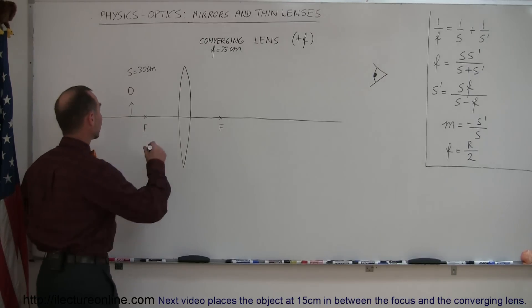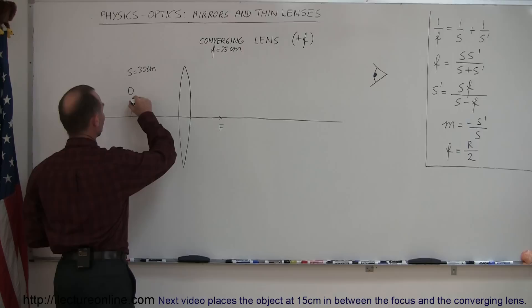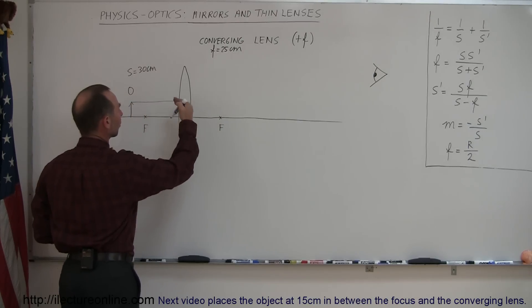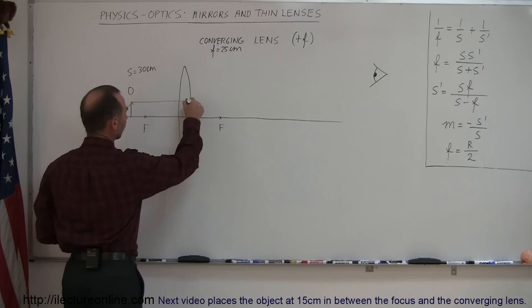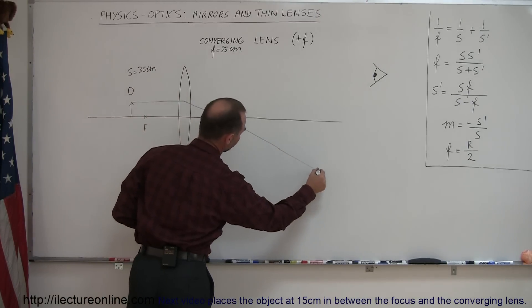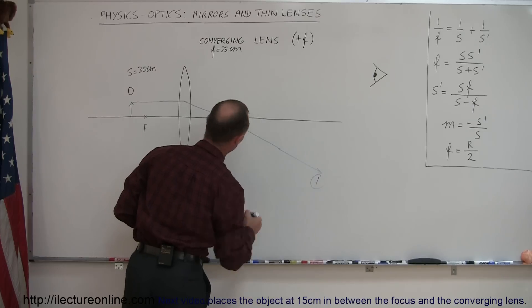Let's draw the ray diagram. The first ray is from the top of the object to the lens. And when we reach the lens, it bends, it refracts, and it continues on to the focal point on the other side. And there we go. That's ray number one.